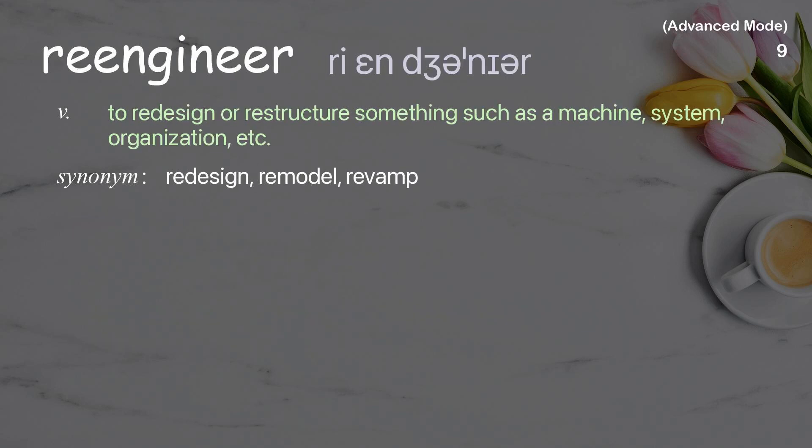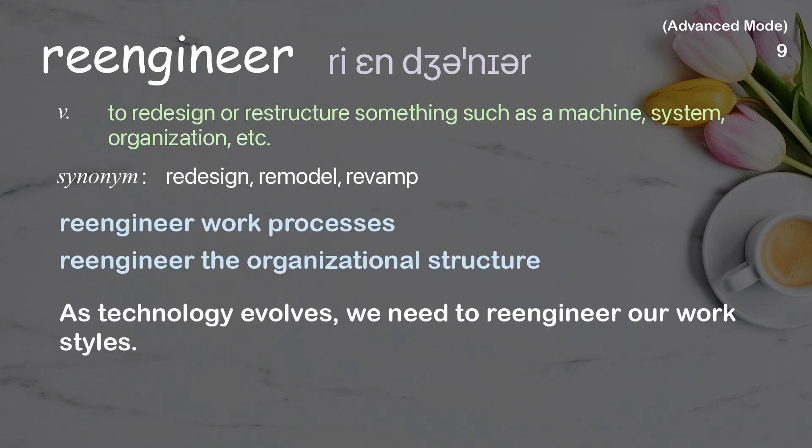Re-engineer: to redesign or restructure something, such as a machine, system, organization, etc. Examples: re-engineer work processes, re-engineer the organizational structure. As technology evolves, we need to re-engineer our work styles.